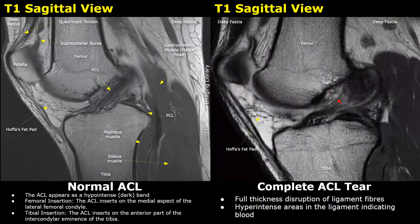This is another case of a complete ACL tear. We can see a full-thickness hyperintense area and a full-thickness disruption of the ligament fibers. The hyperintense areas inside the ligament indicate hemorrhage.